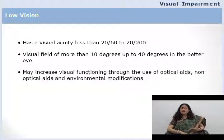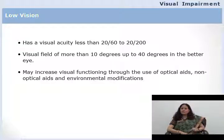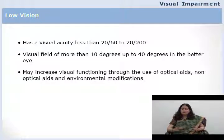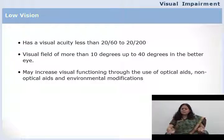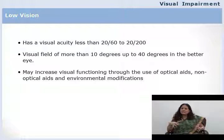Another definition of low vision is that a low vision person has some vision whose visual efficiency can be improved with the help of optical aids, non-optical aids, and environmental modifications. This definition has educational implications. Teachers should focus on optical aids such as magnifiers and specially designed lenses, non-optical aids such as large print books, and environmental modifications such as good contrast and better lighting — all of which can improve a child's visual functioning.